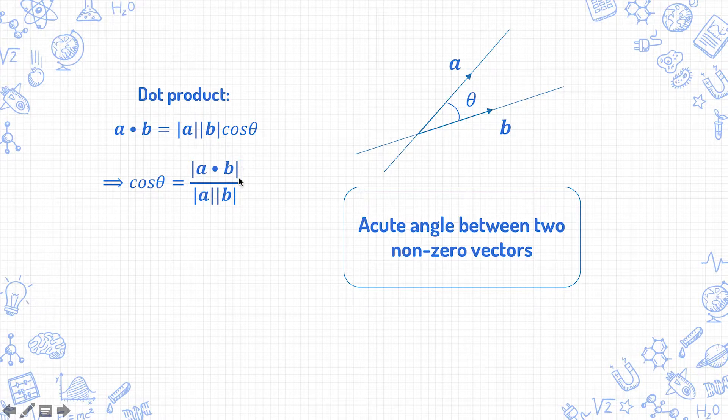just rearrange this to cos theta equals a dot b over mod a mod b. And I like to put a mod in front of the a dot b, because later on, when you go on to find theta by taking cosine inverse of this expression, you want the acute angle theta. So that means that cosine theta has to be positive.